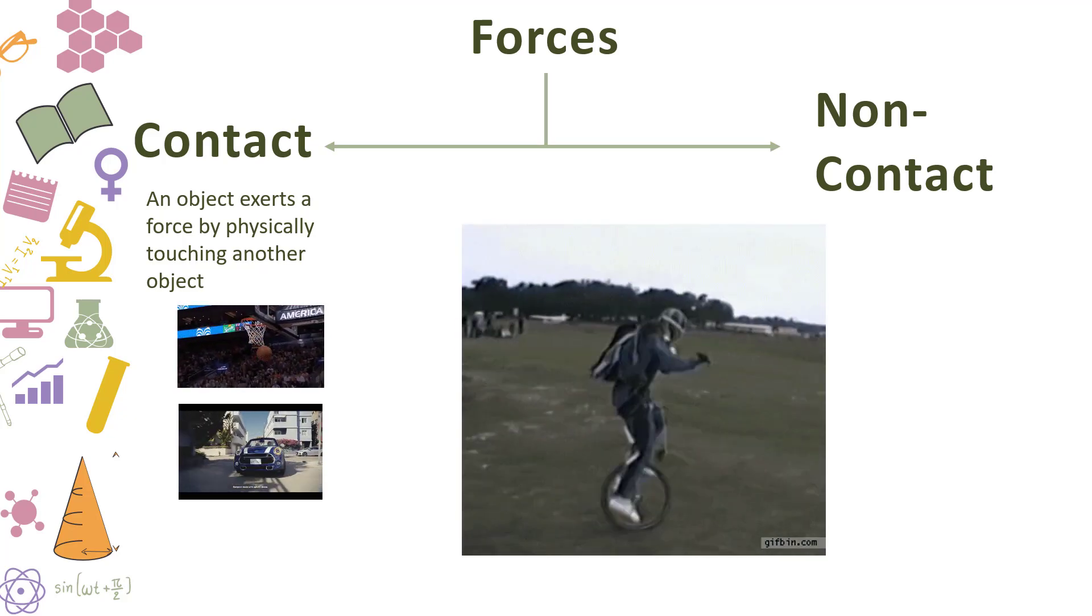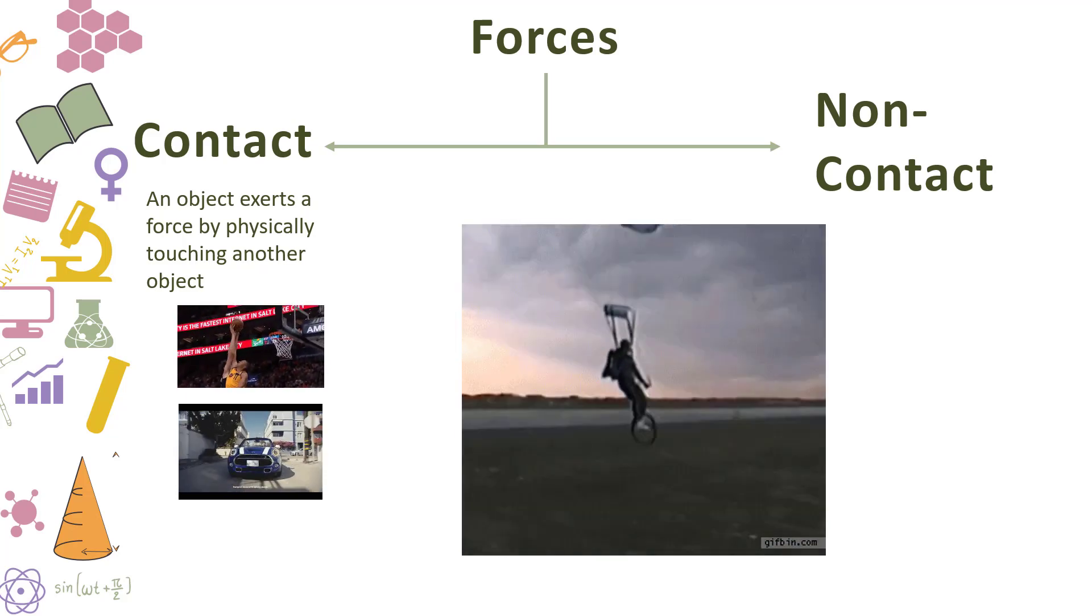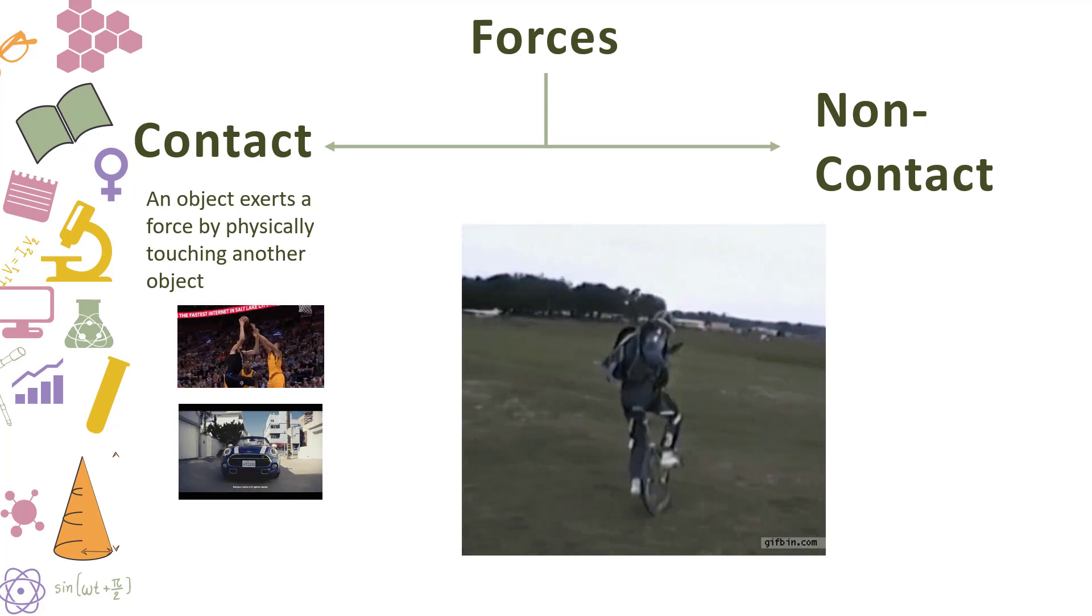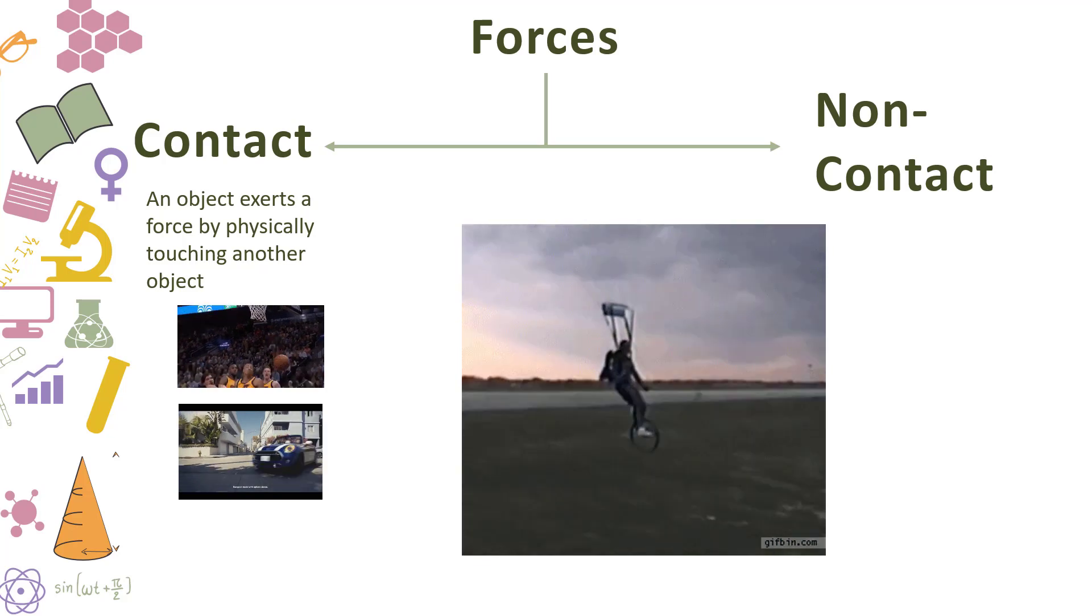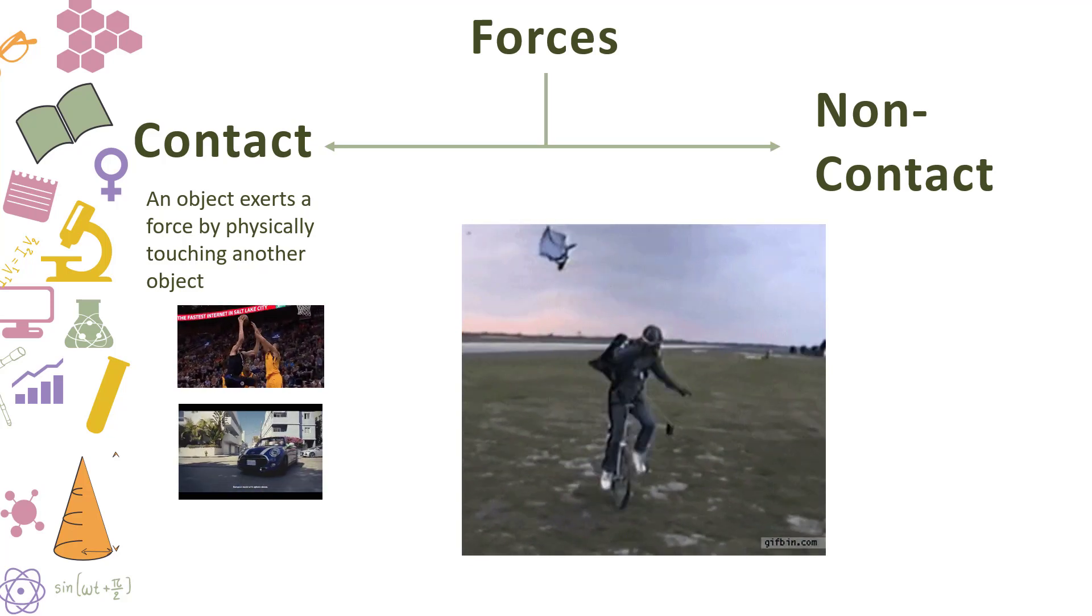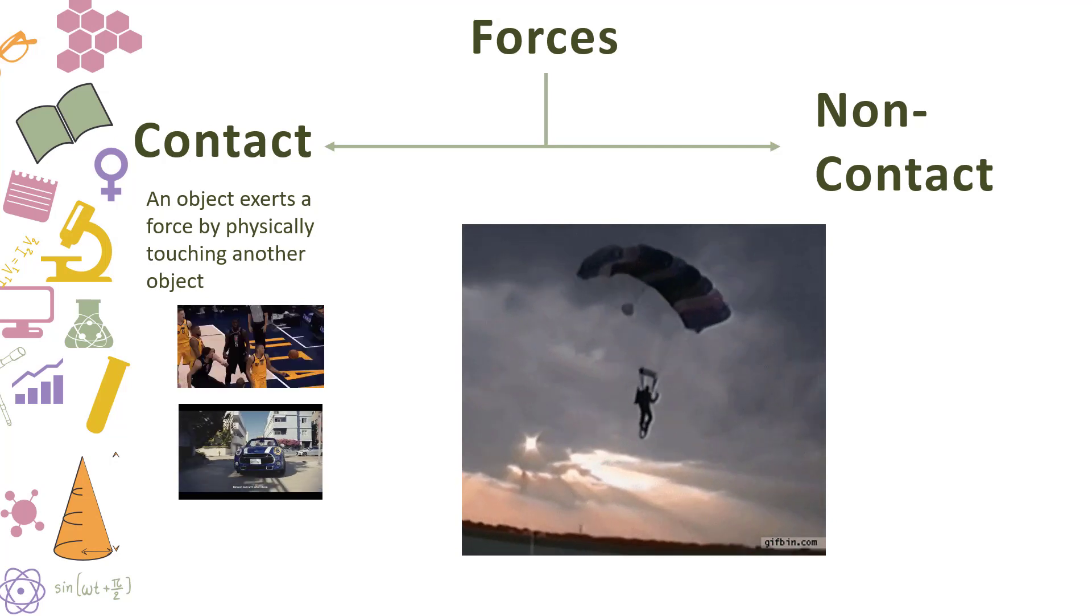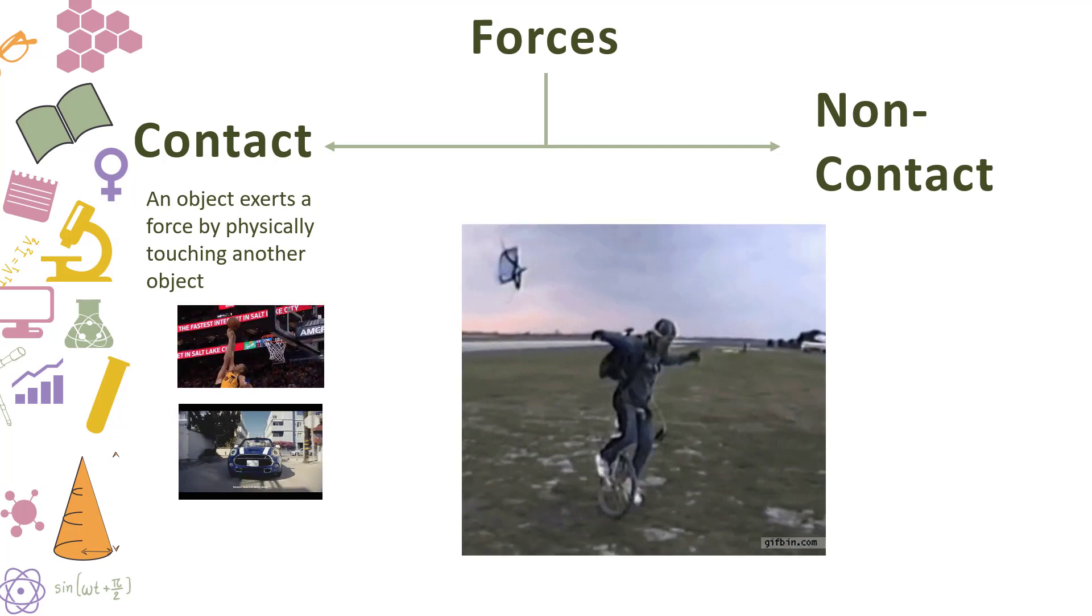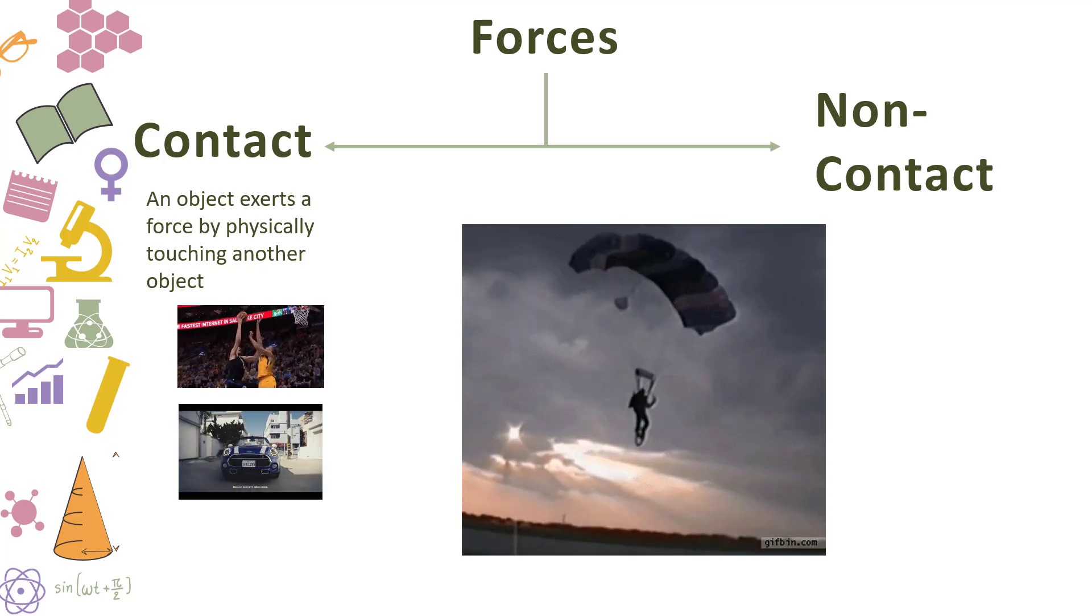He actually then keeps on using a contact force as he pedals. His foot is pushing against the pedal, allowing him to keep moving. And there is also friction between his wheel and the grass as well. So whenever, for instance, you're going for a bike ride, you're going for a walk, you're actually exerting a contact force. If you were parachuting to school, for instance, if that's the case, you're also under a contact force.